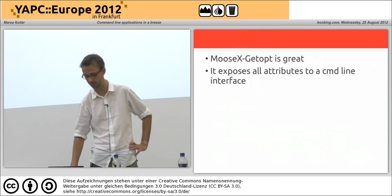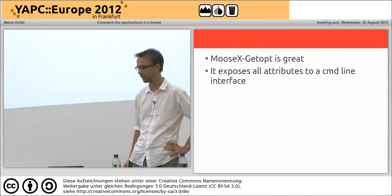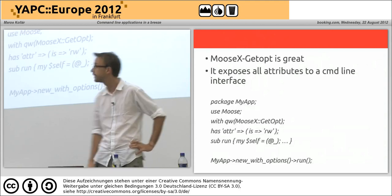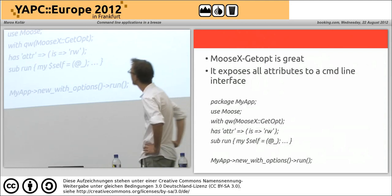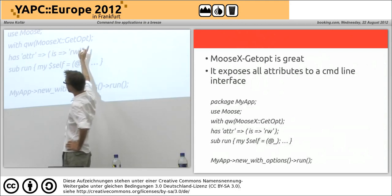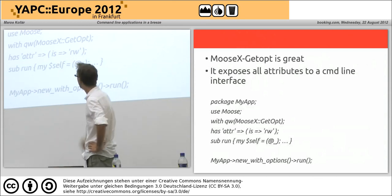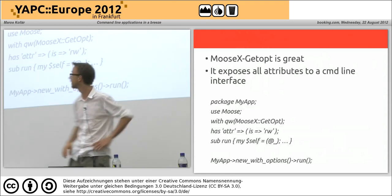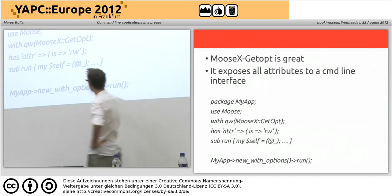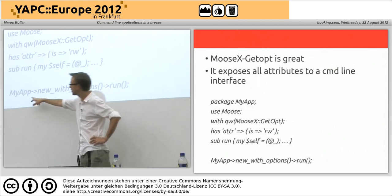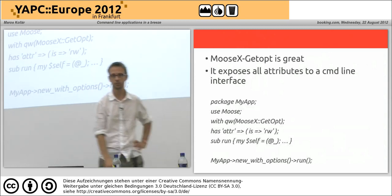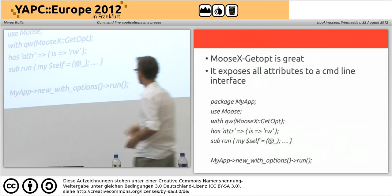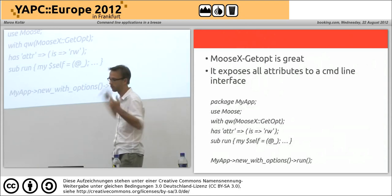MooseX::Getopt is great — I love it, I've used it several times. It simply exposes all your attributes defined in your class to a command line interface. A typical MooseX::Getopt code would look like: just add 'with MooseX::Getopt', load the Getopt role, define some attributes as you would do, and you have to have a method that actually does something — can be called 'run', 'execute', whatever you like. Then in an invocation script you just call 'new_with_options', which reads all the input from the user, and then on this object you just call 'run'.